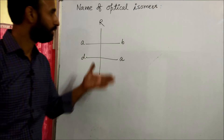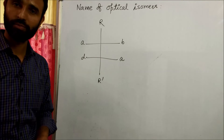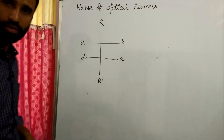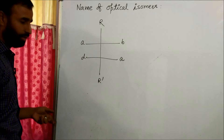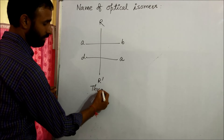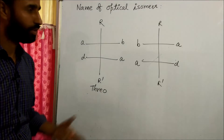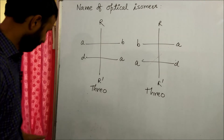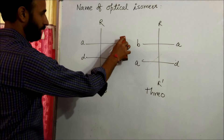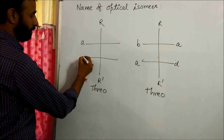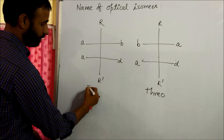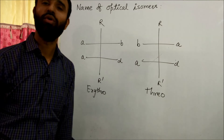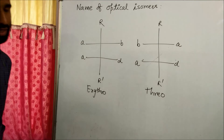Practice question: Is this given structure the erythro or threo form? The answer is threo form. If you rewrite it in a different orientation, it becomes erythro. So this concludes the erythro and threo system of nomenclature.